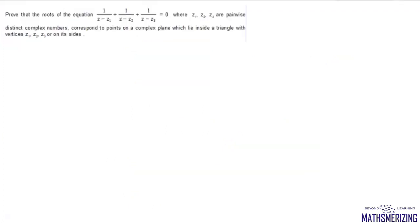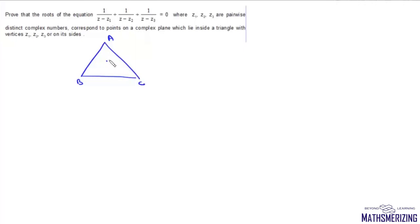The next question: prove that the roots of the equation 1 upon z minus z1 plus 1 upon z minus z2 plus 1 upon z minus z3 equals 0 correspond to points on the complex plane which lie inside the triangle with vertices z1, z2, z3 or on its sides. Suppose we have triangle ABC and point P represented by z.